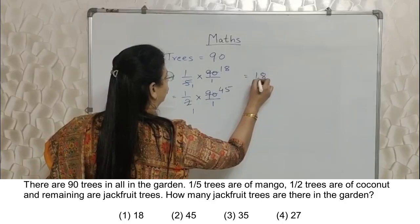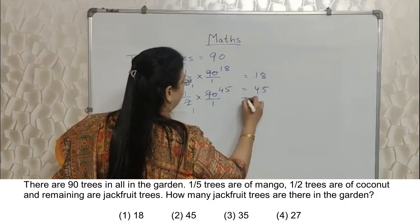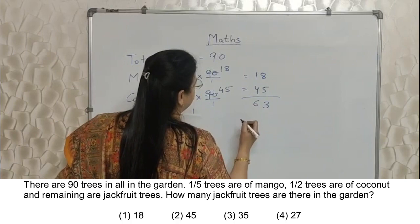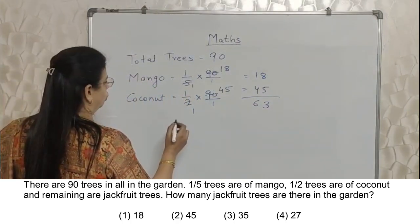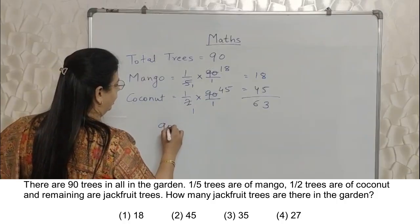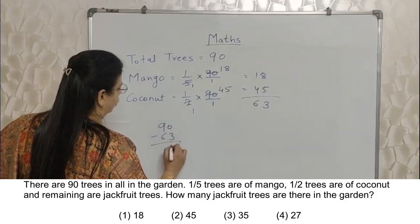Now, mango trees are 18, coconut trees are 45. Total is 63. 63 trees are of mango plus coconut. So jackfruit will be 90 minus 63, which is 27.